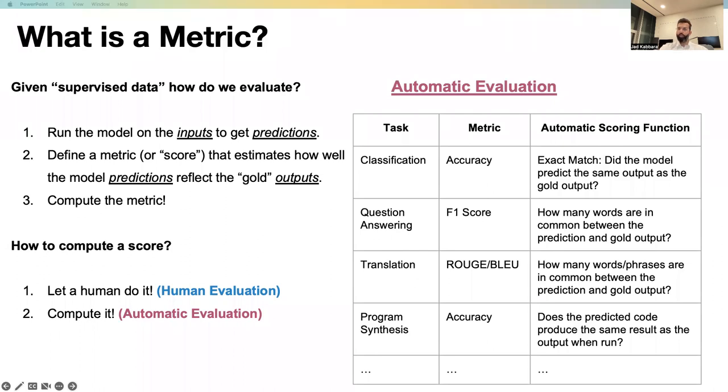If we look at span-based question answering, the goal is to extract the answer to a question from a given text, if such answer exists. In this case, we can use the F1 score to see how many words are in common between the prediction and the gold output of the model, and that way we can assess the performance of the QA model.